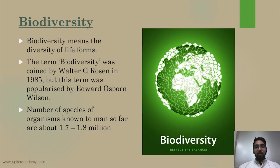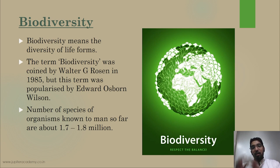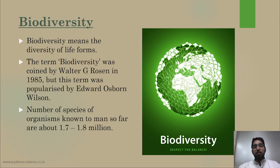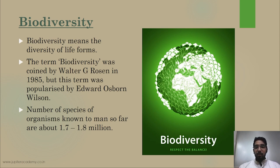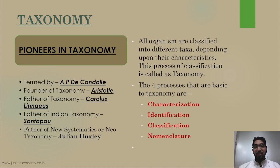As the name suggests, biodiversity means diversity of biological life forms — the number of different organisms present in a particular area. The term biodiversity was coined by Walter G. Rosen in 1985 but was popularized later by Edward Orson Wilson. The number of species of organisms known to man so far is about 1.7 to 1.8 million species. There may be several unknown species, but as of now 1.7 to 1.8 million species are known.